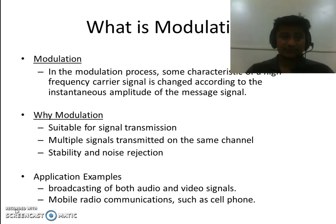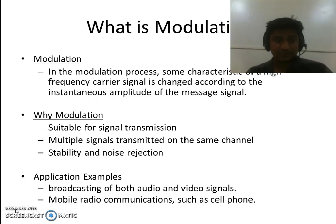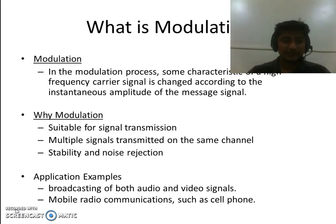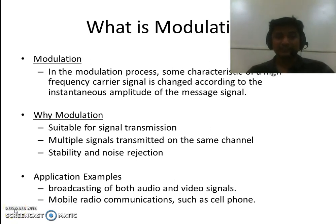In Amplitude Modulation, the amplitude of the carrier will get varied according to the amplitude of the message signal. Similarly, in Frequency Modulation, the frequency of the carrier signal gets varied according to the message signal. The purpose of Modulation is to transmit a signal over a longer distance. Using a modulation scheme we can transmit multiple signals using the same channel.